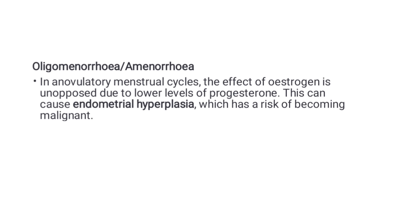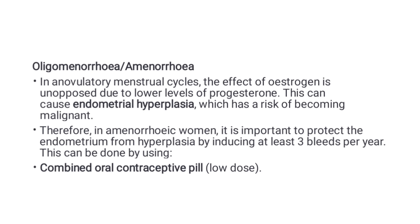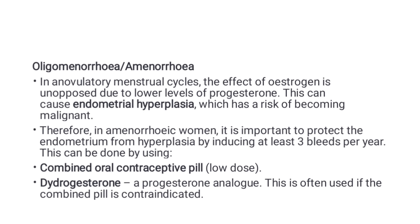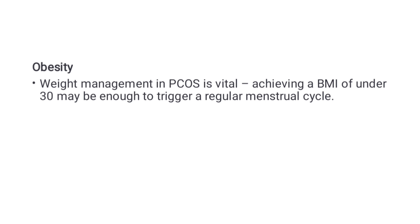For oligomenorrhea or amenorrhea, in anovulatory menstrual cycles the effect of estrogen is unopposed due to lower levels of progesterone, which can cause endometrial hyperplasia with a risk of becoming malignant. It is therefore important to protect the endometrium by inducing at least three bleeds per year, which can be achieved using combined oral contraceptive pills or dydrogesterone, a progesterone analogue, if the combined pill is contraindicated.